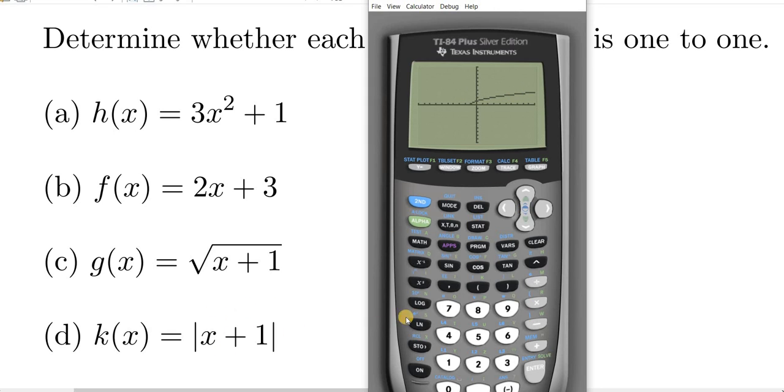The last one is an absolute value function, so let me show you how to do that. In order to access the absolute value function on the calculator, you have to go into the catalog feature down here, it's a blue key. So you have to hit second, catalog, and there it is, abs.